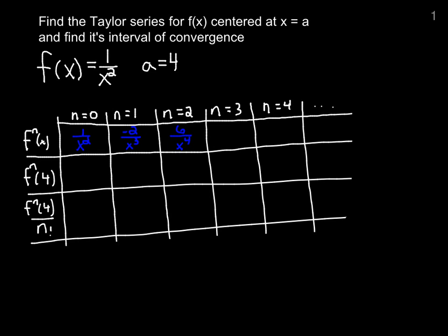Next, we'd have a negative 24 over x to the 5th. Finally, a positive 120 over x to the 6th. And the pattern will continue.